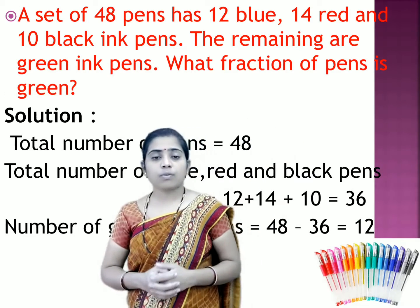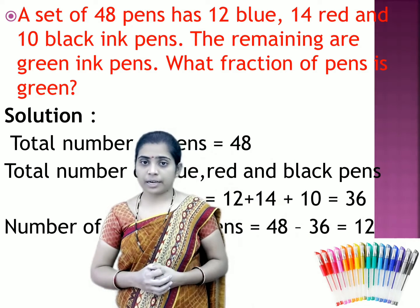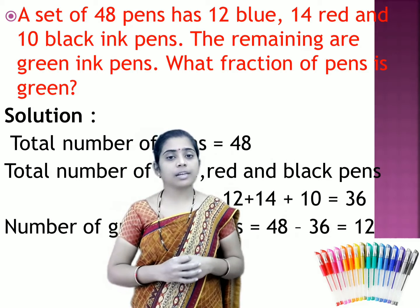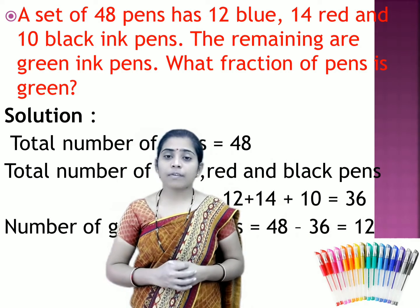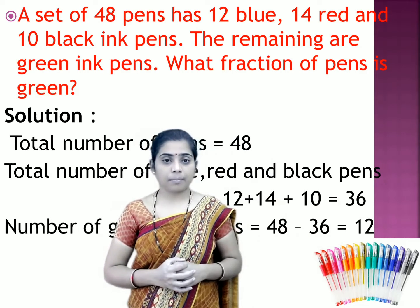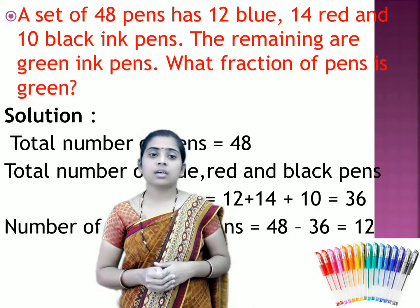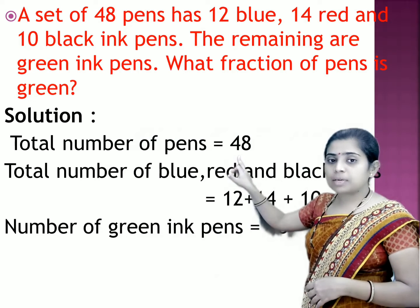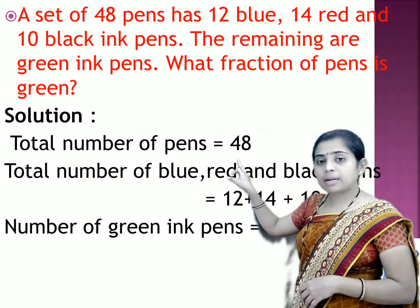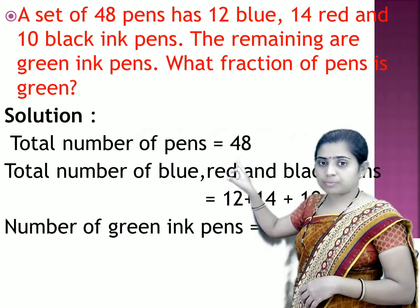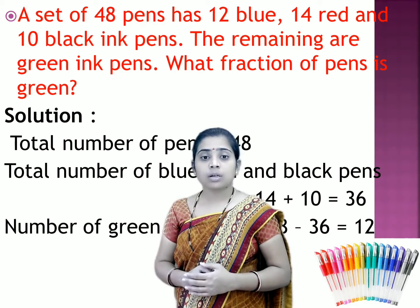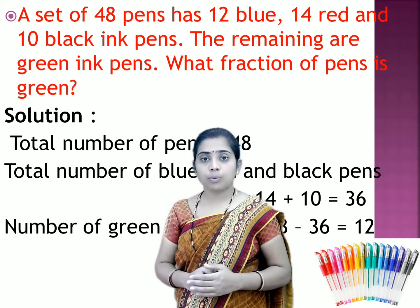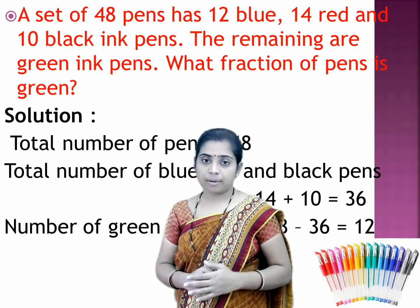A set of 48 pens has 12 blue, 14 red, and 10 black ink pens. The remaining are green ink pens. What fraction of pens is green? Let us begin with the given things. Total number of pens is equal to 48. To find out the number of green pens, first of all we will add the number of blue, red, and black ink pens.